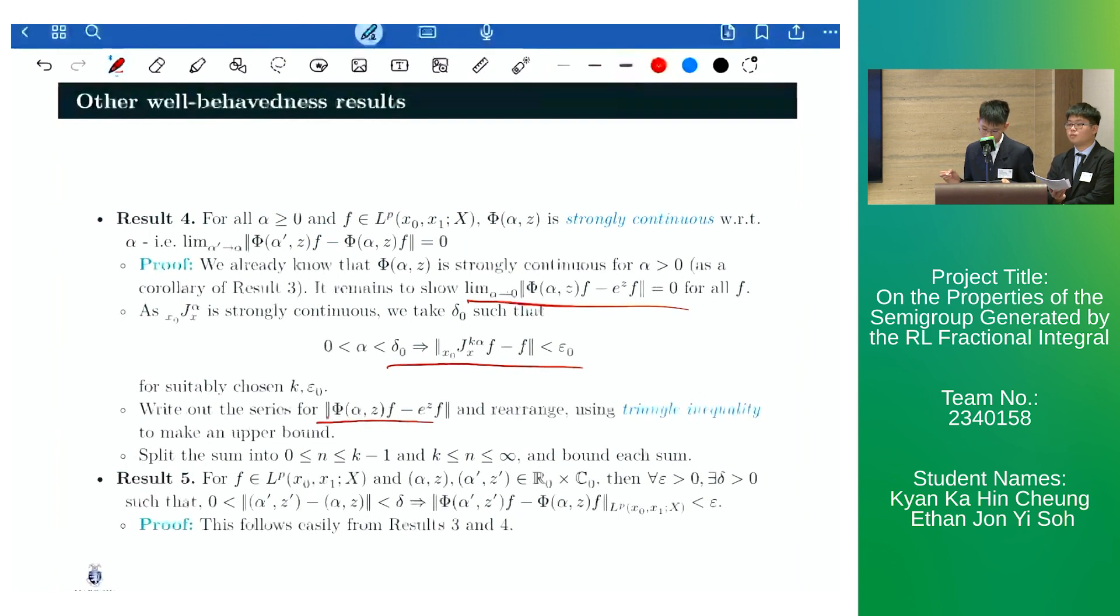Lastly, we can then split the resulting sum into two parts and bound each sum. Our last result states that this inequality holds. This result actually follows from results three and four and is thereby omitted.